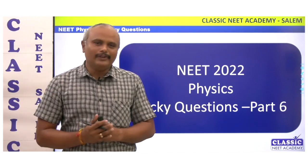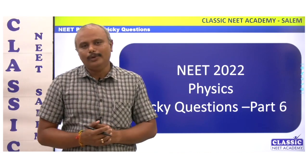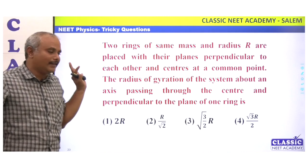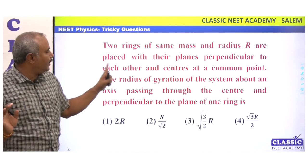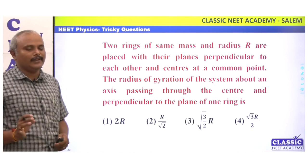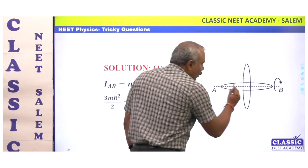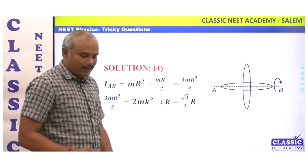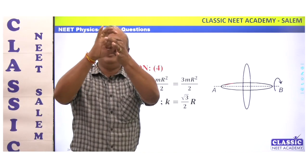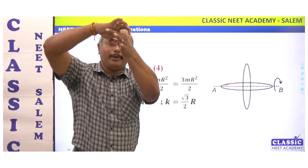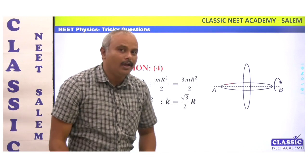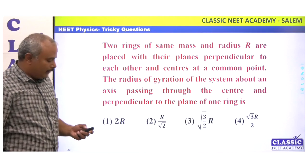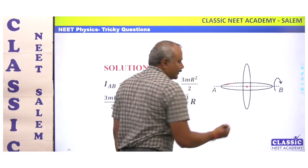It is a relatively easy question, but how do you imagine it? We will see that. Two rings of same mass and radius are placed with their planes perpendicular to each other. You can see that two rings are here, planes are perpendicular to each other, with a common center.